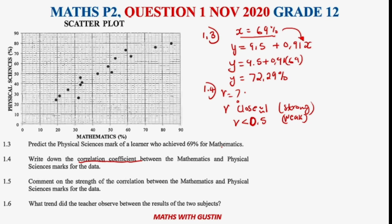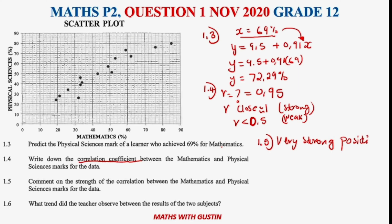Question 1.5 says: comment on the strength of the correlation between mathematics and physical science marks. Based on our r value of 0.95, we can say there is a very strong positive correlation, meaning there is a very close relationship between the mathematics marks and the physical science marks in this data.